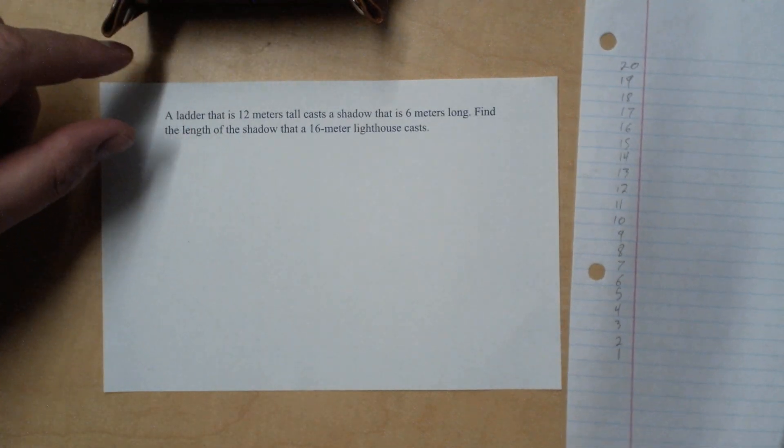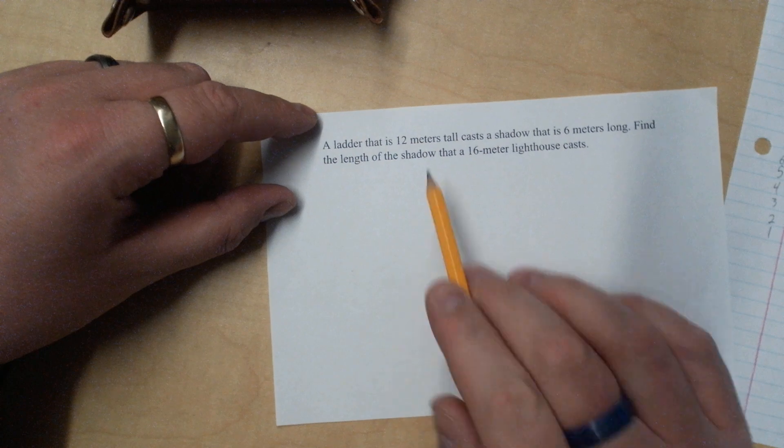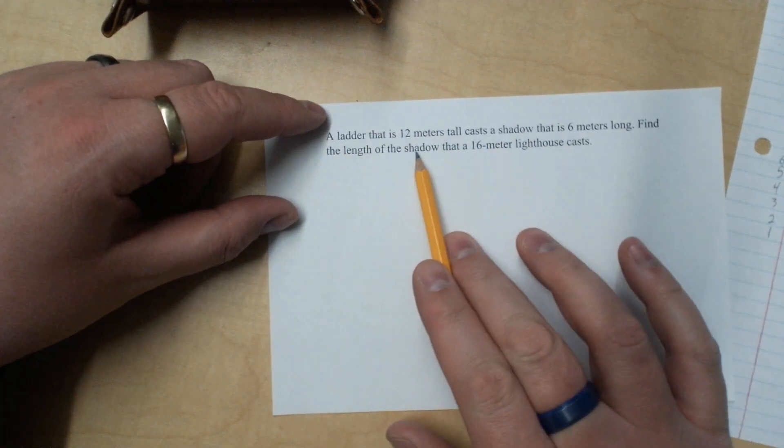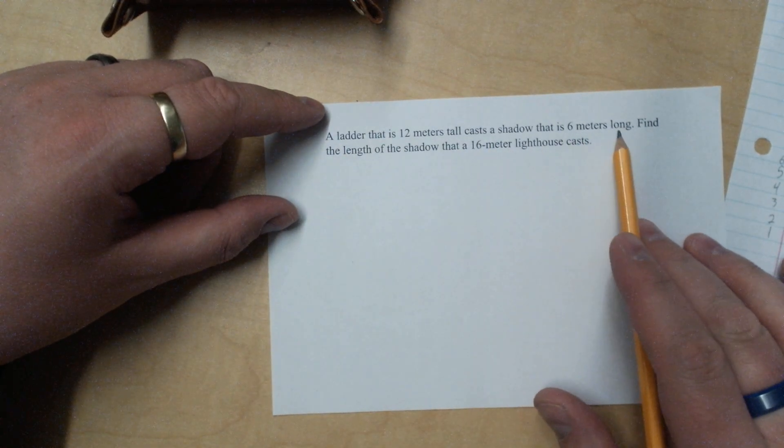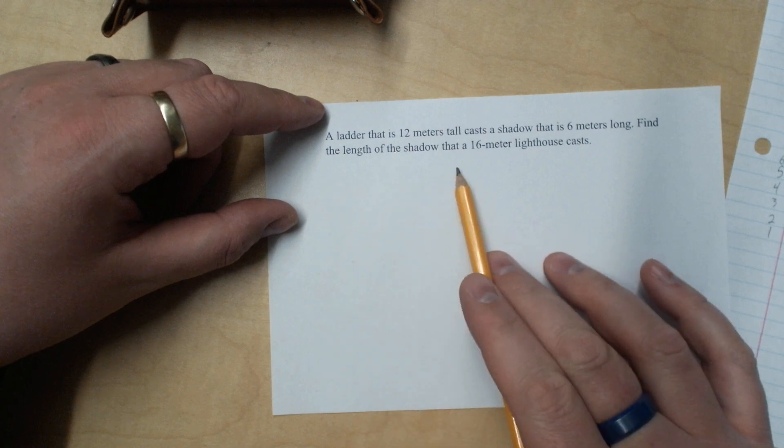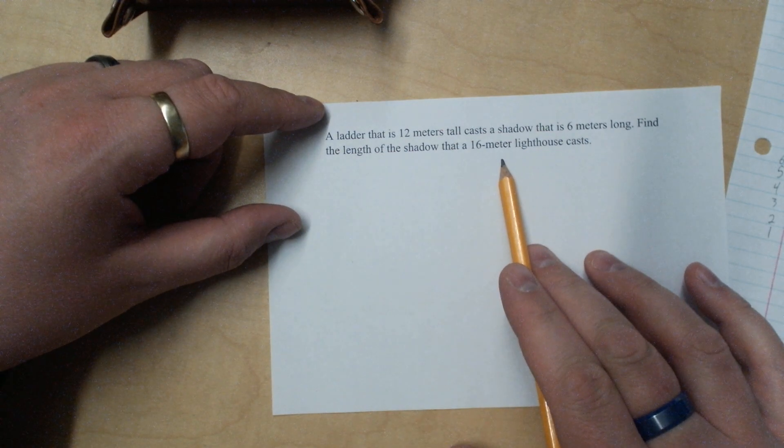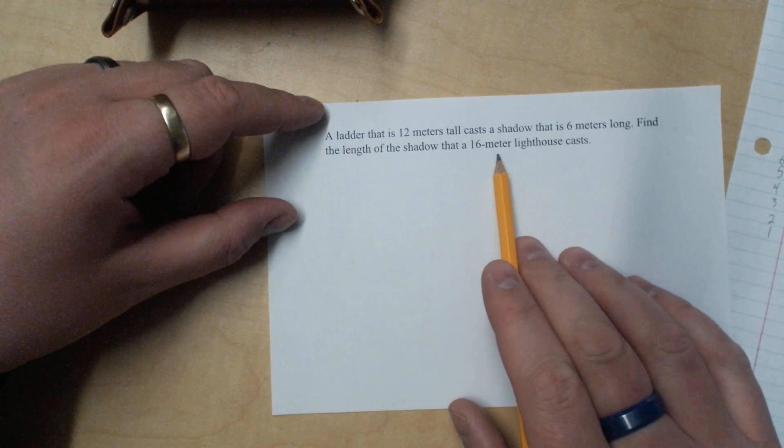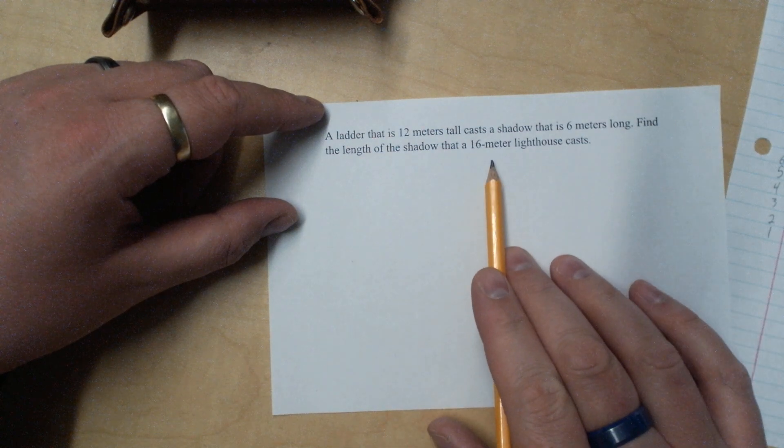Let's start with our word problem. A ladder that is 12 meters tall casts a shadow that is 6 meters long. Find the length of the shadow that a 16 meter lighthouse casts. It's implied that the lighthouse is 16 meters tall.